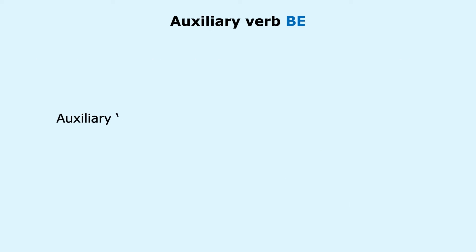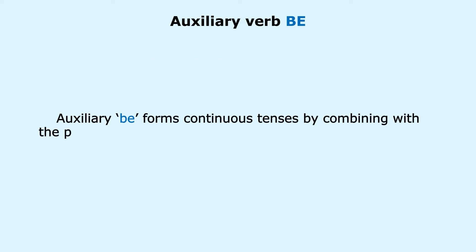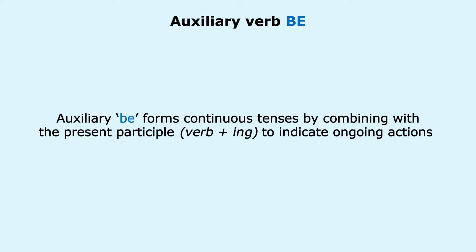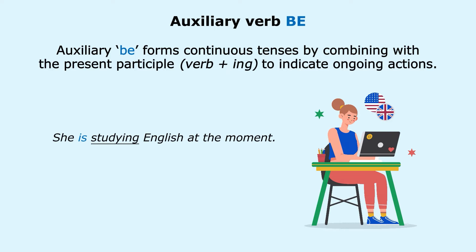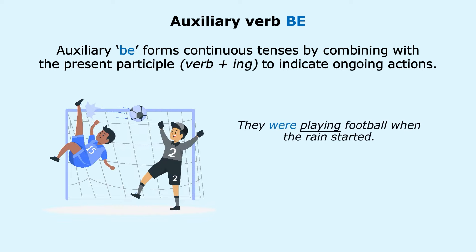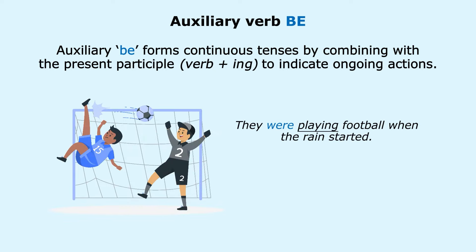Auxiliary Be forms continuous tenses by combining with the present participle (verb + -ing) to indicate ongoing actions. For example: 'She is studying English at the moment' (present continuous); 'They were playing football when the rain started' (past continuous).